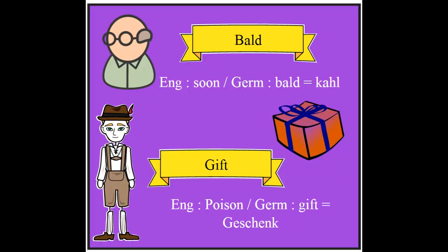The first word we're gonna start with is 'bald.' Bald in German means 'soon,' but the correct German term for the English word 'bald' is actually 'kahl.' Second word: 'Gift.' Gift in German is 'poison,' but the gift or present in English is 'Geschenk' in German.